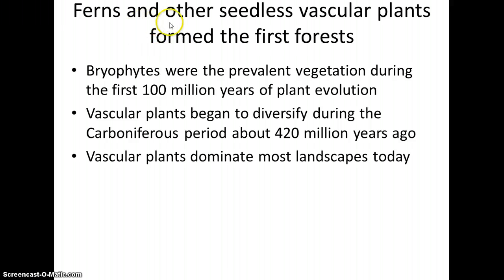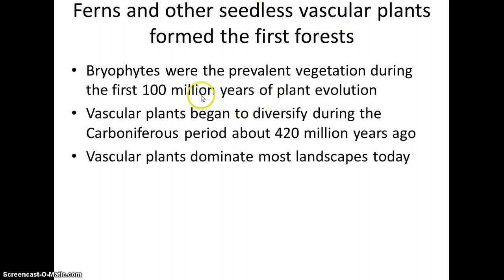Now we get into the vascular plants. The next important evolutionary step is the development of vascular tissue, which allows plants to get larger. At this point we still do not have seed plants — the ferns do not have seeds. Way back in the day, fern-type plants formed these large forests with really large trees, and that's when you got the first Earth's forests forming.